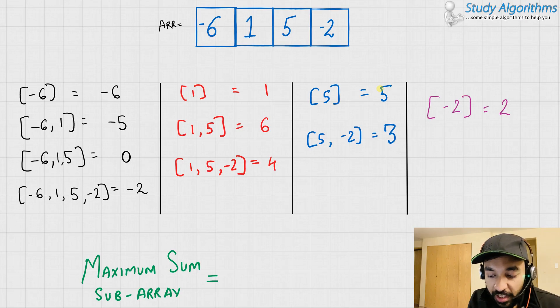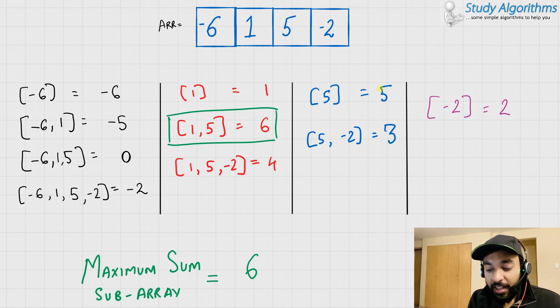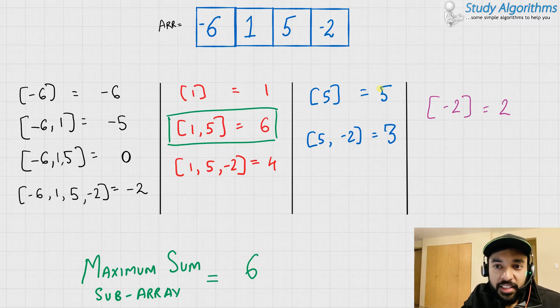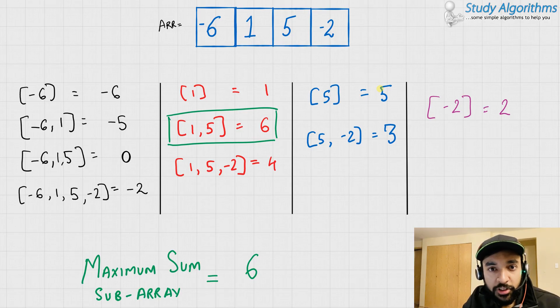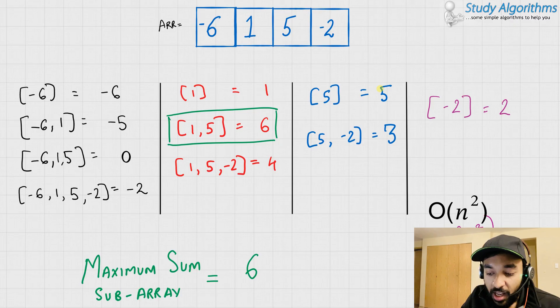So, out of all of these possible subarrays, we can see that the maximum sum is formed by this subarray. So, our answer should be 6. But can you see the problem we would be having by this method? In just an array of size 4, you already have 10 different subarrays possible. Think about a case when you have an array of size 100 or 1000. Then, the number of contiguous subarrays would just explode and you would realize that this solution is not efficient. In fact, the complexity of this solution is order n squared. Can we optimize this? Let us try to think about it.